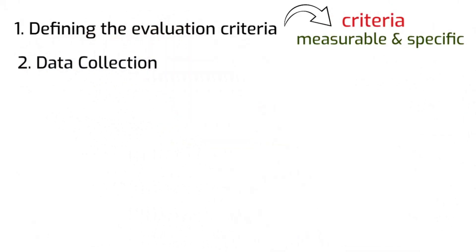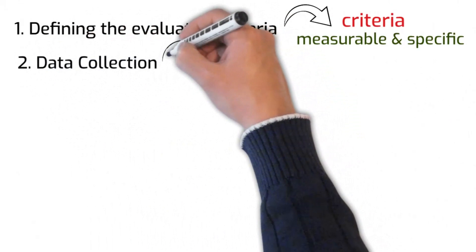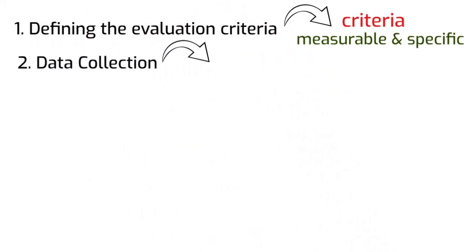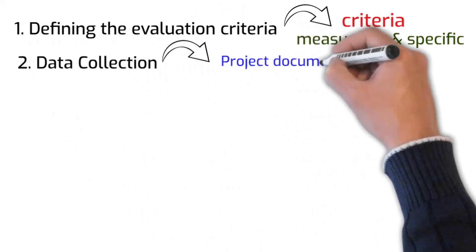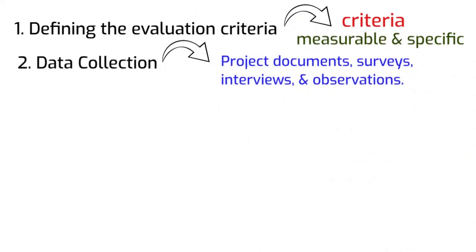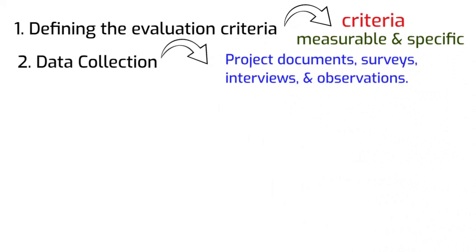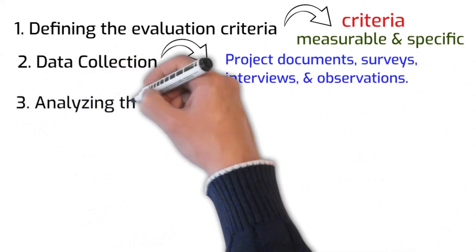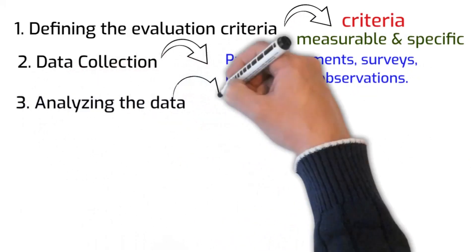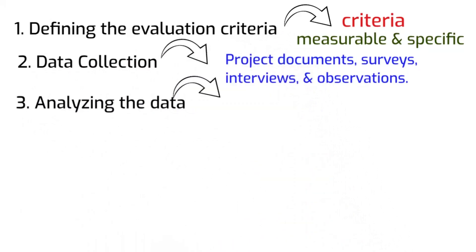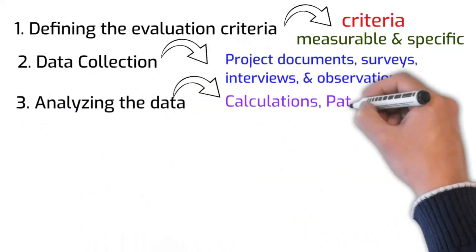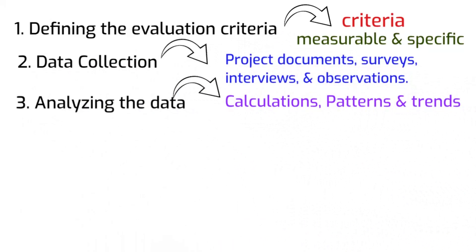Number two is data collection. After defining the evaluation criteria, we can start collecting data to see the project's performance against those criteria. Data can be collected through project documents, surveys, interviews and observations. Number three is analyzing the data. Once the data is collected, we need to analyze it to identify patterns and trends, and look for areas where the project has met or exceeded expectations and areas where it has fallen short.